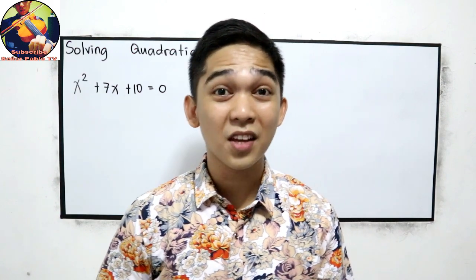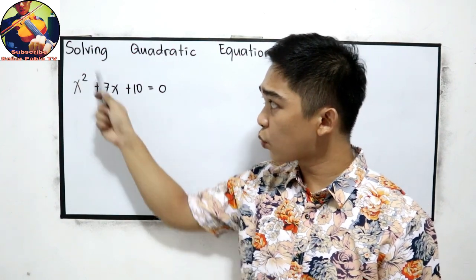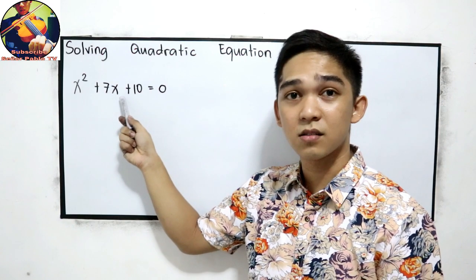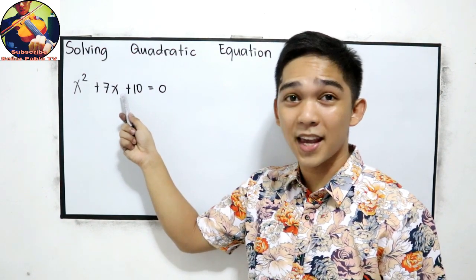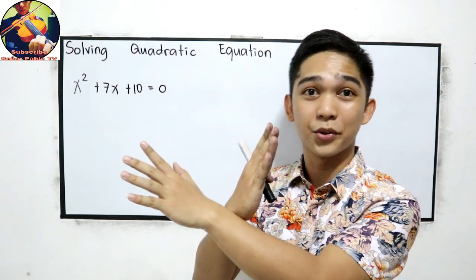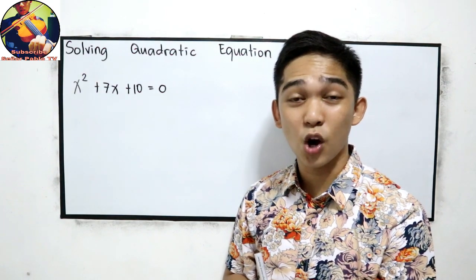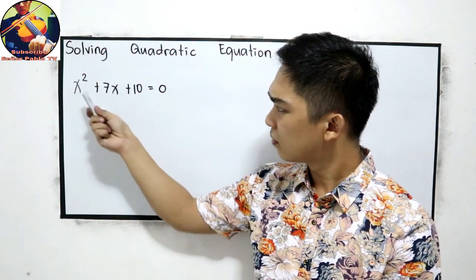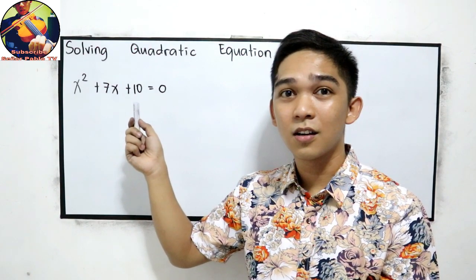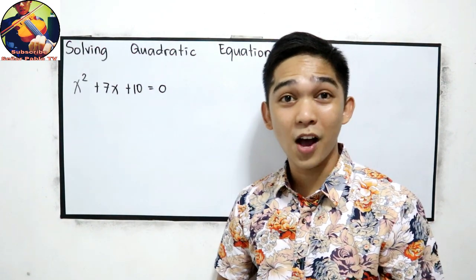Can we use extracting the square root? If we extract the square root, we will have the square root of 7x — that will become more complicated. So, x for extracting the square root. How about factoring GCF, greatest common factor? In this case, we don't have a common factor, so x for the greatest common factor.